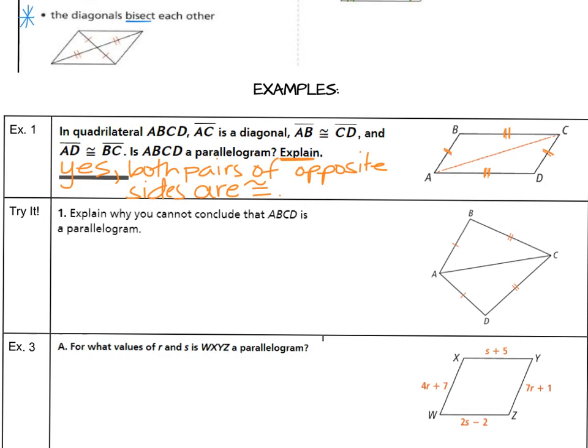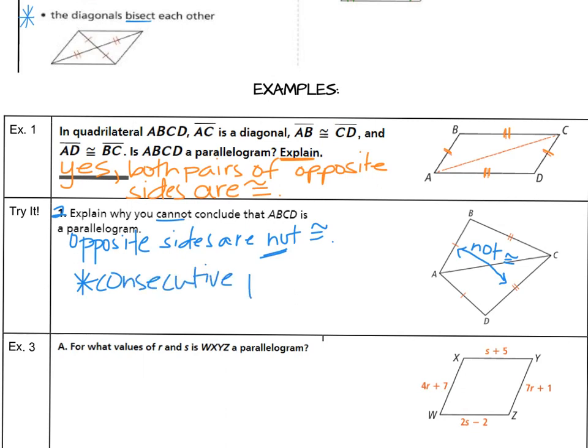Then it says try it. This should technically be question two. Explain why you cannot conclude that the next shape ABCD is a parallelogram. If we look at the markings notice AB and CD are not congruent. It's consecutive sides being congruent but not opposite. So to justify why it's not a kite we can say opposite sides are not congruent. So it doesn't apply for that condition up above. This shape has consecutive sides. That's a different type of quadrilateral. If consecutive pairs are congruent this shape is a kite.